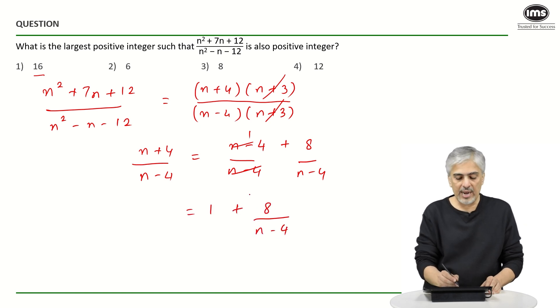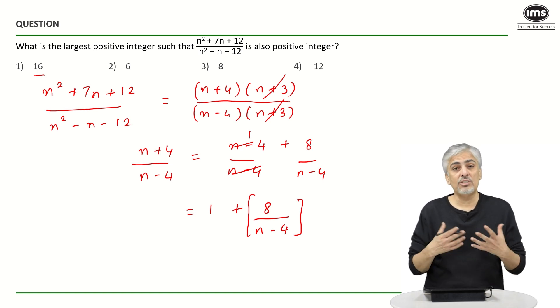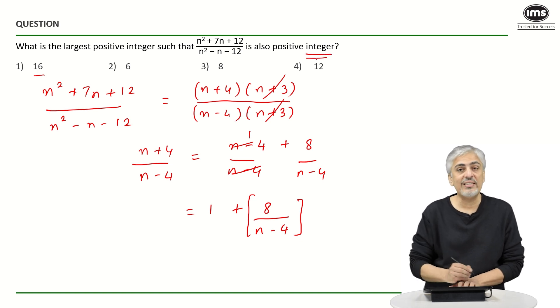Now I need this to be positive. 8 upon n minus 4 has to be positive. So if you now just look at the, even if suppose this is a TITA question, 8 upon n minus 4 has to be also an integer because it is a positive integer. So n can be 12.